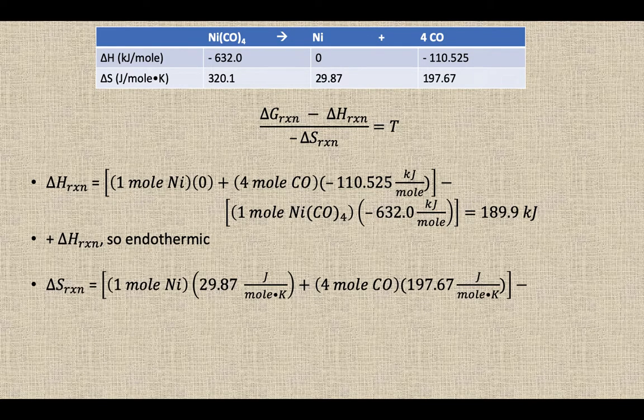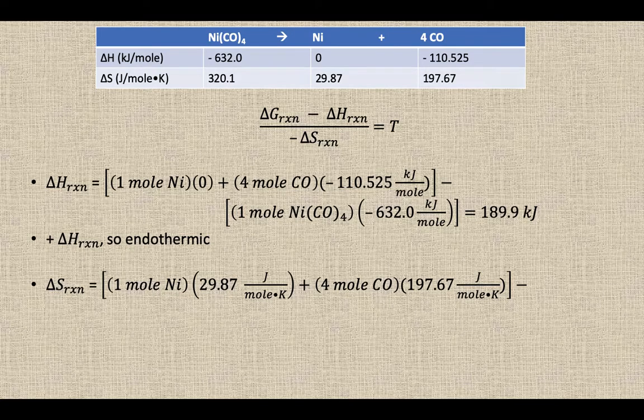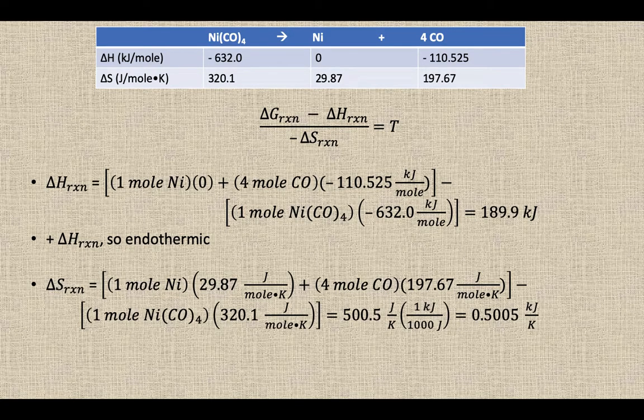Then we do the delta S for that reaction, and we do our one mole of nickel plus four moles worth of carbon monoxide, subtract out our reactants, and we get a positive 0.5005 kilojoules per Kelvin.